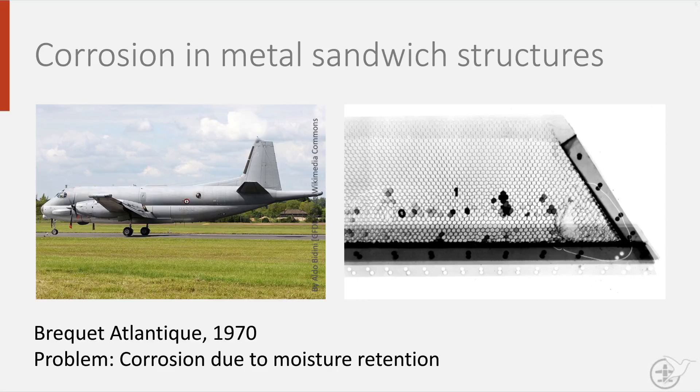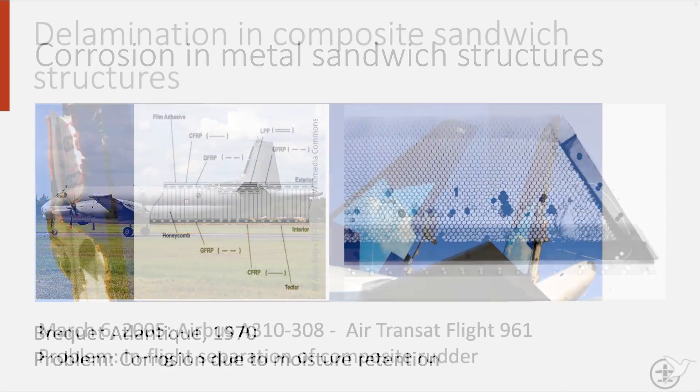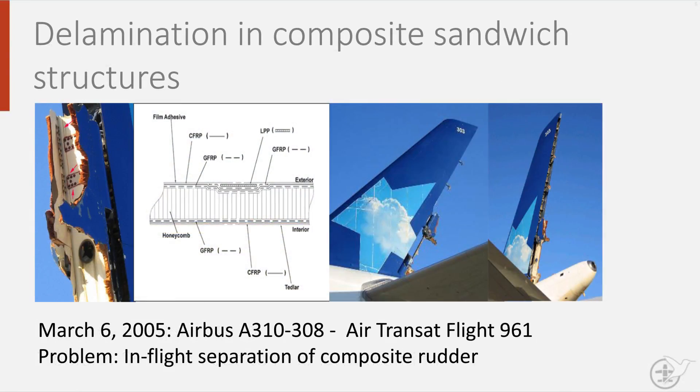This problem of water retention is not just limited to metallic sandwich structures. In 2005, an Air Transat Airbus A310 had to perform an emergency landing as it lost a large part of its composite rudder in flight. The subsequent air safety investigation discovered that the moisture had been absorbed and trapped inside the sandwich panel, causing rapid delamination of the face sheets from the core. This delamination was the result of the moisture freezing and therefore expanding.